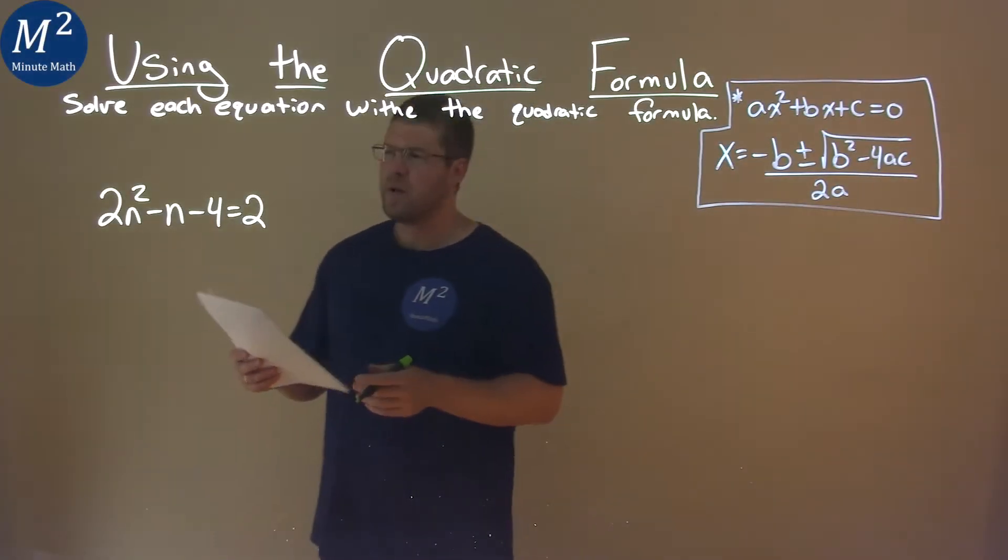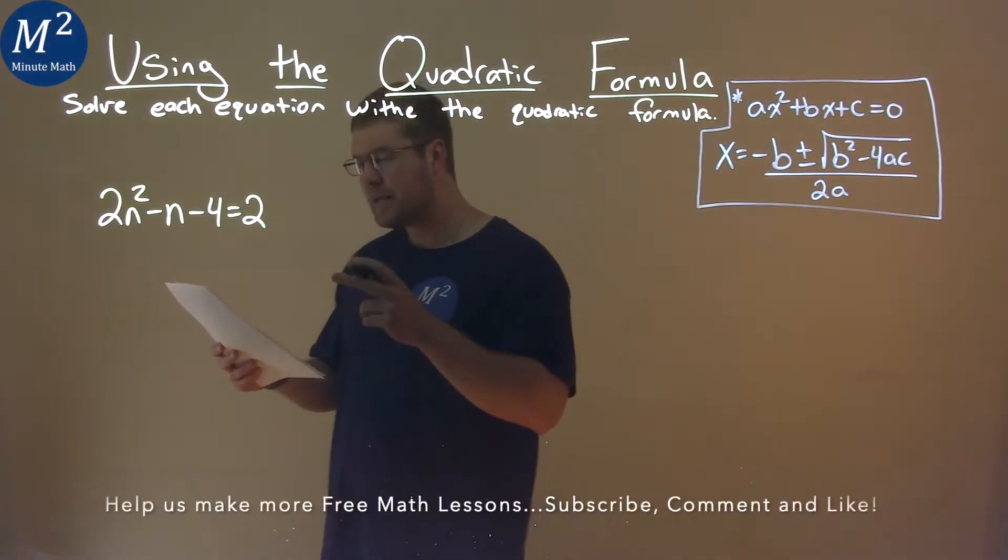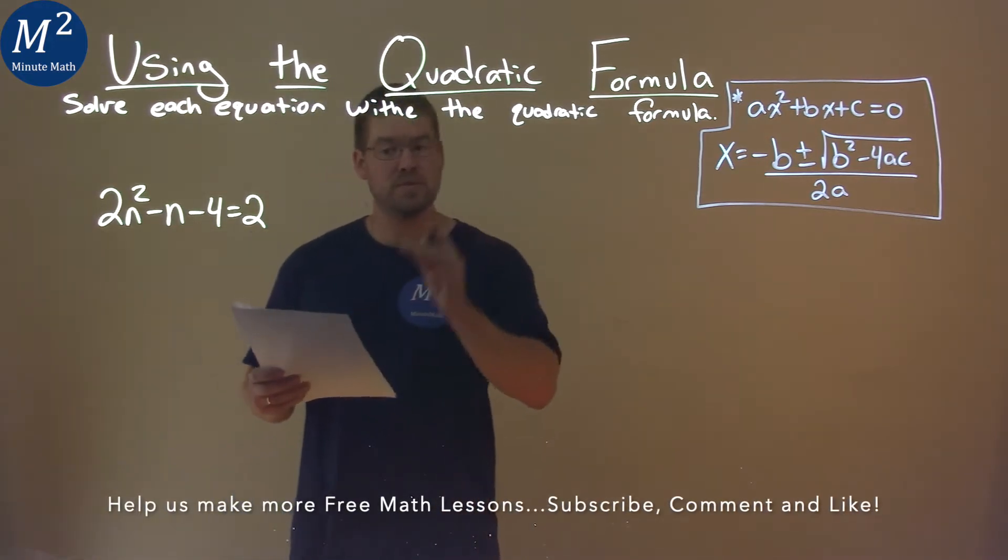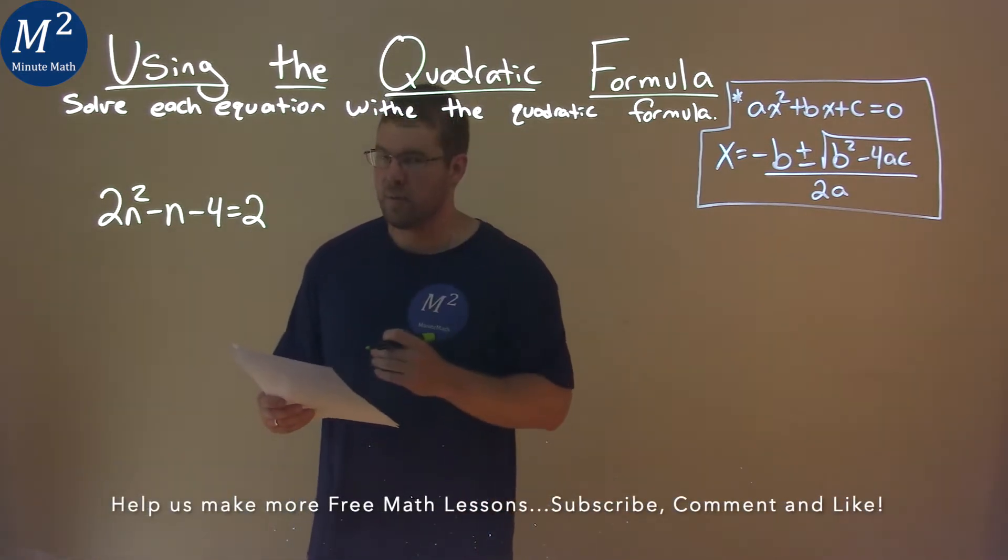We're given this problem right here: 2n² - n - 4 = 2, and we need to solve this using the quadratic formula.